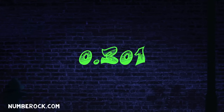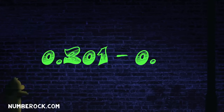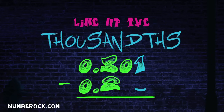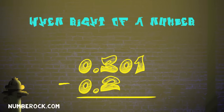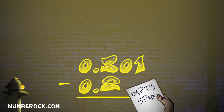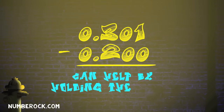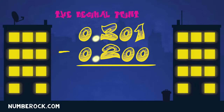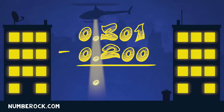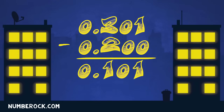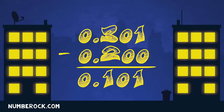Three hundred one thousandths minus two tenths — line up the tenths, hundredths, and thousandths. When right of a number there's an empty space, writing zeros can help by holding the place. The decimal point drops directly below, so that the points line up in a row. Subtract each place value to find the difference: equals one hundred one thousandths.